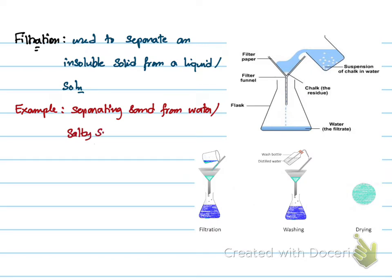This is the solution. It can also be like the example in the picture — chalk from water. So we are separating the chalk from water. Steps of filtration: number one, we are going to filter the solid, which is sand or chalk.